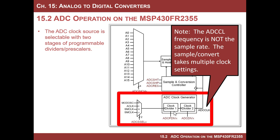There are two pre-scalers — clock divider one and clock divider two. One important note: the frequency of the ADC clock you choose is not the sample rate. So if you have one megahertz coming in and you don't divide it, that doesn't mean you get one mega sample per second — the conversions actually take multiple clock cycles, at a minimum eight clock cycles, but often more depending on your settings. So your actual sample rate is way slower than your clock frequency.